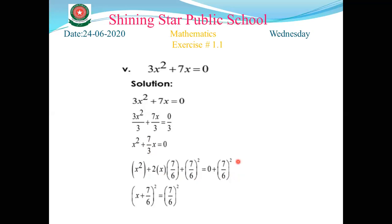The fourth step: close the formula on the left-hand side. Here a is x and b is 7/6, so (x + 7/6)² = 0 + (7/6)² = (7/6)².